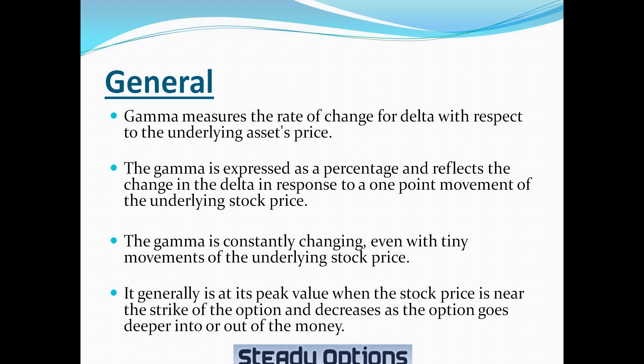The gamma of an option is expressed as a percentage and reflects the change in the delta in response to a one-point movement of the underlying stock price. Like the delta, the gamma is constantly changing even with tiny movements of the underlying stock price. It generally is at its peak value when the stock price is near the strike of the option and decreases as the option goes deeper in or out of the money.